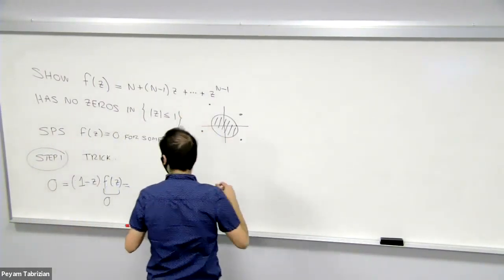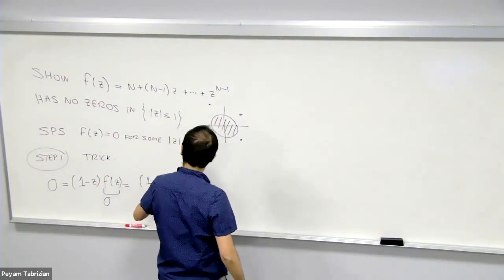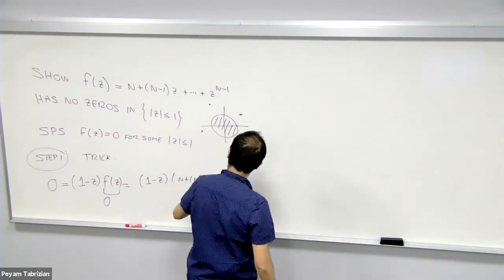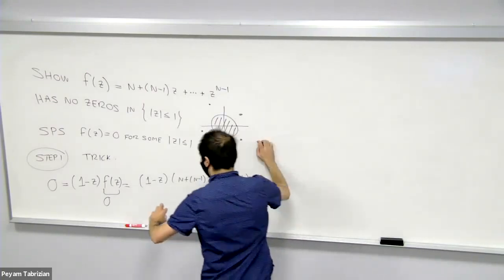On the other hand, let's multiply this out. So this is (1-z) times (n + (n-1)z + ... + z^(n-1)). And expanding this,